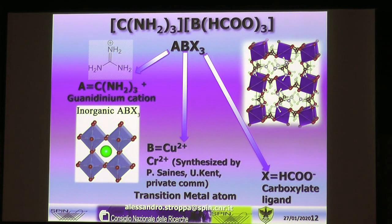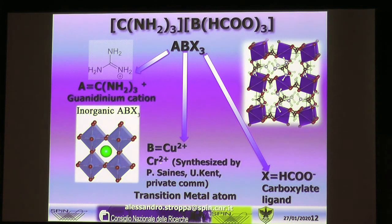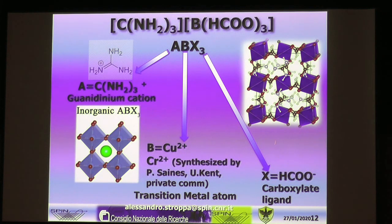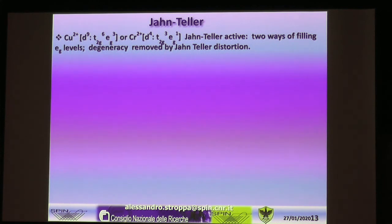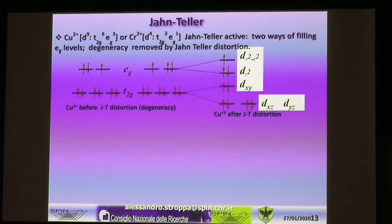To summarize: we have a perovskite topology where the A-site is the guanidinium cation with its resonant Lewis structure from organic chemistry. The B-site is Cu²⁺ — we also predicted Cr²⁺ would show the same physical properties, and it was recently synthesized by colleagues in the UK. The X-site is the carboxylate ligand. Cu²⁺ is a Jahn-Teller ion with twofold degeneracy, which must be split by distortion according to the Jahn-Teller theorem.